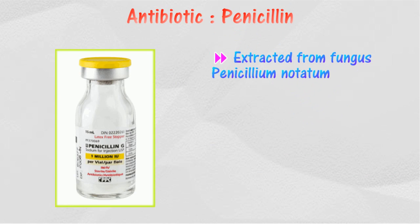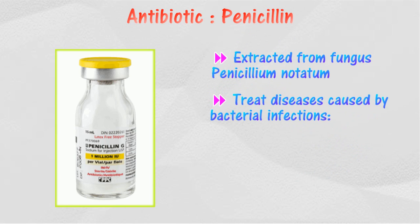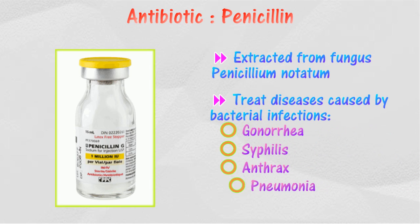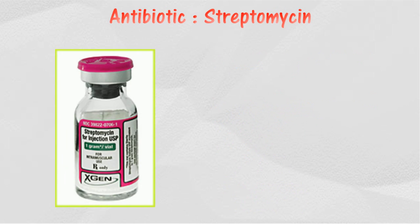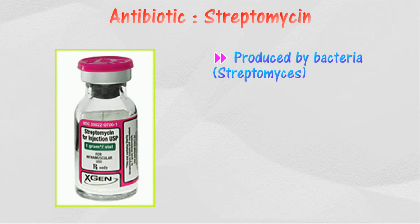Penicillin is produced by fungi, also known as Penicillium notatum. It is a powerful antibiotic used to treat diseases caused by bacterial infections such as gonorrhea, syphilis, anthrax, pneumonia, and meningitis. Streptomycin is produced by soil bacteria of the genus Streptomyces.